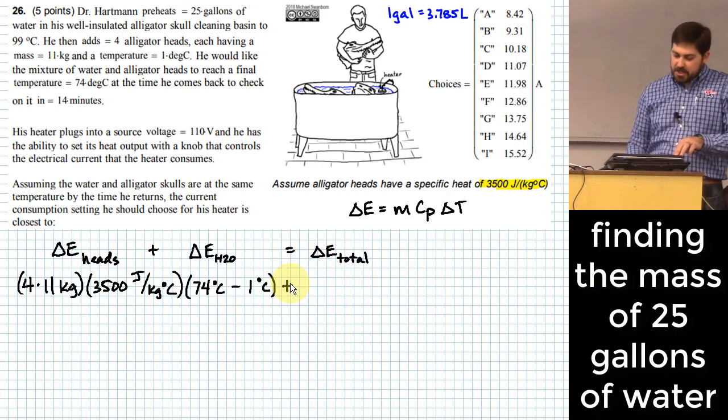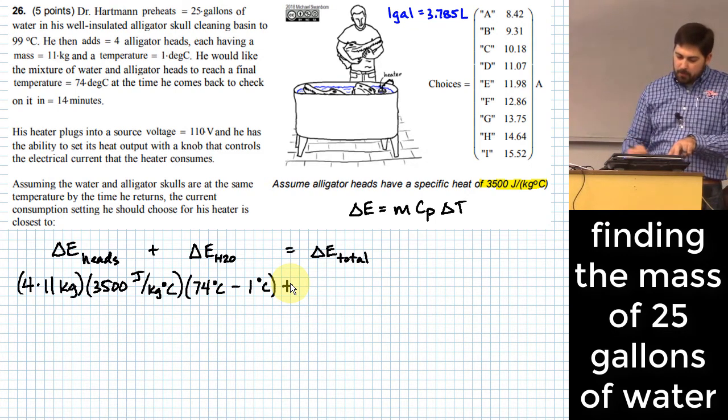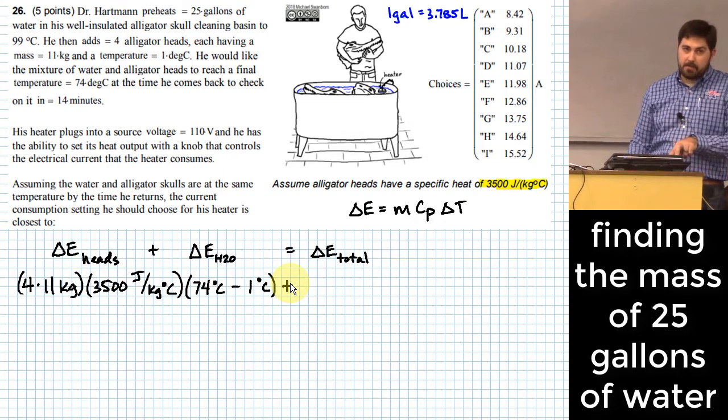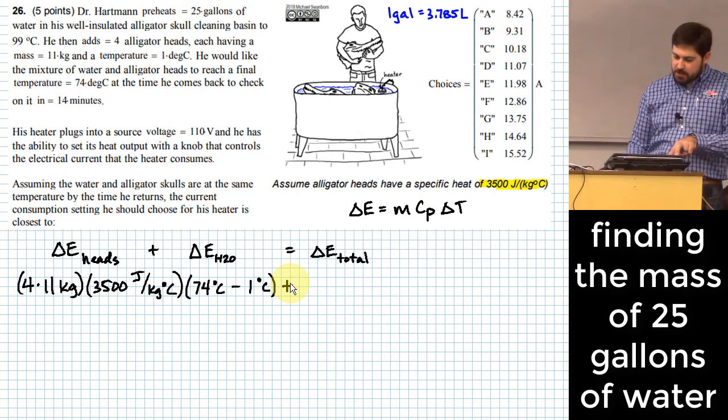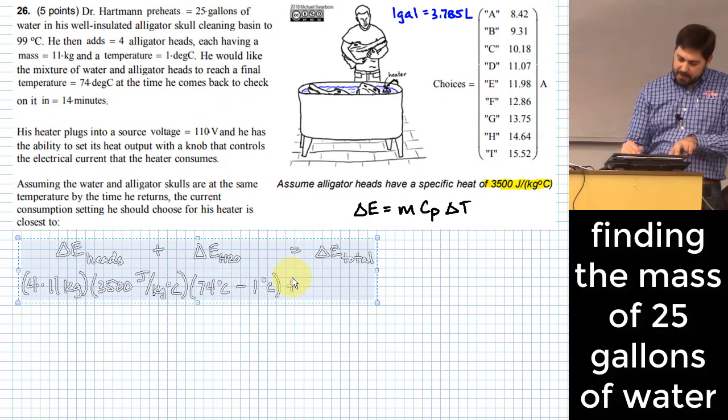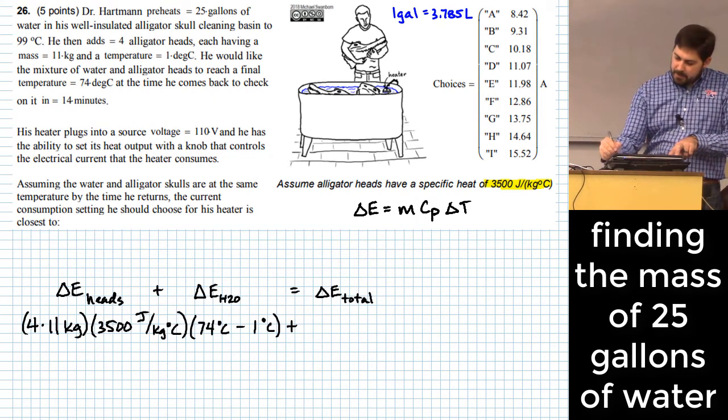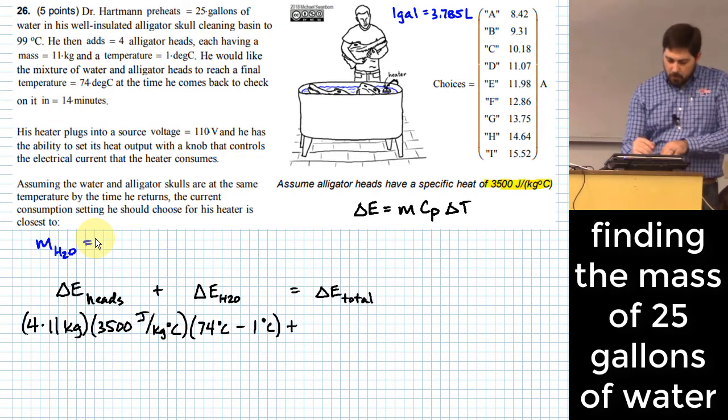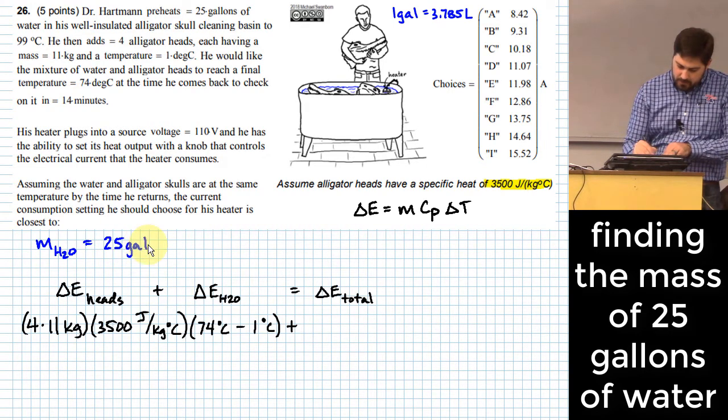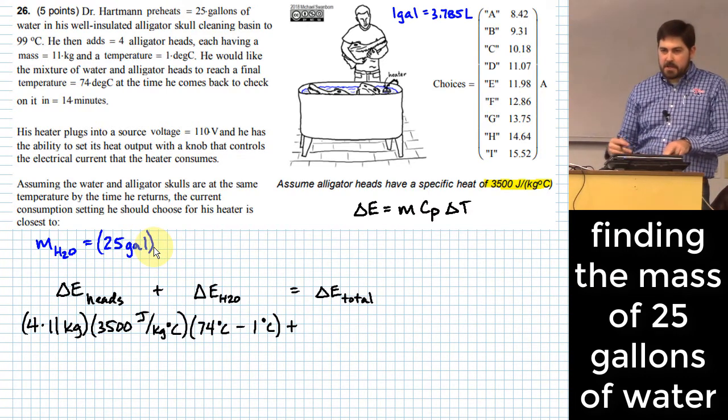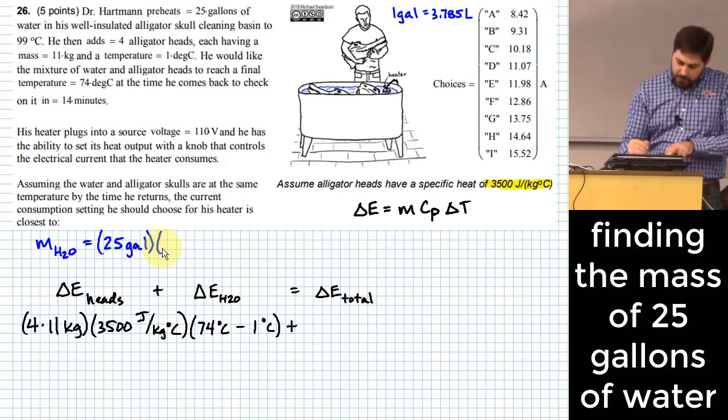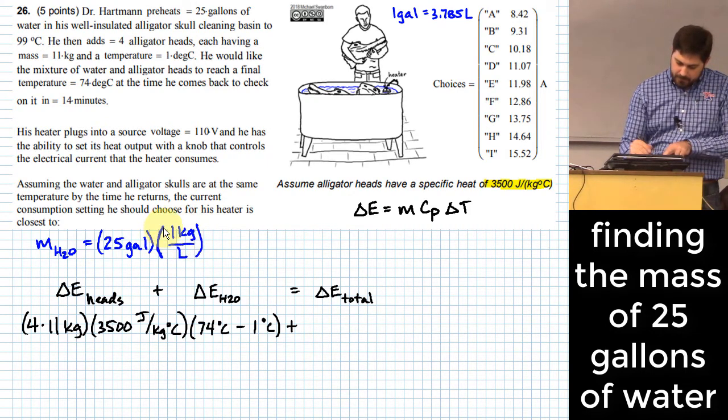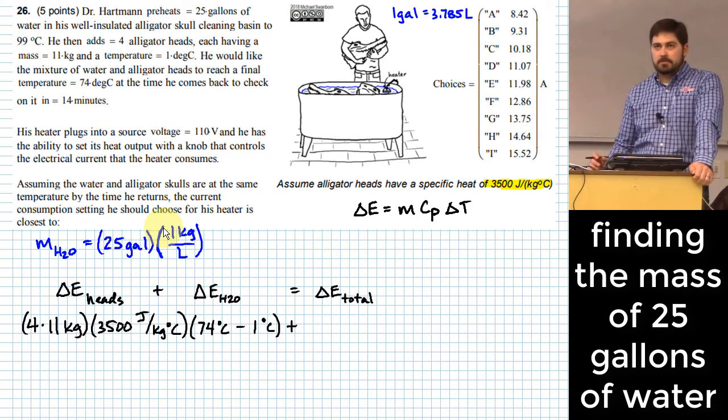Now I need to take the change in internal energy of the water. Same type of format, more or less. What's the difference? We need to convert some gallons into some kilograms. Here's how I suggest we do that. The mass of water is going to be equal to the volume of the water, which is 25 gallons, times what? Mass is equal to volume times density. And the form of density that I'll choose to put in here is 1 kilogram per liter. That's the mass. What's wrong? I mean, we could put in there gallon kilograms per liter, and that is a statement of mass.